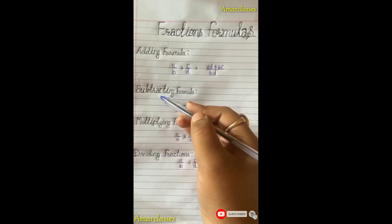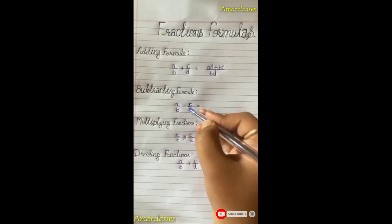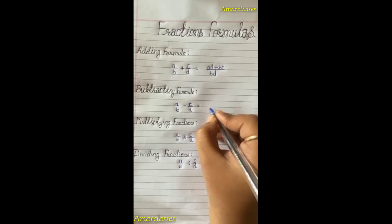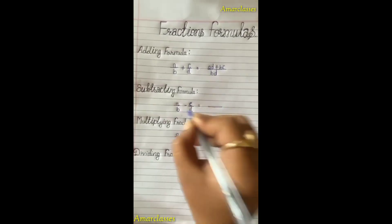Second one is subtracting formulas: a by b minus c by d equals LCM, cross multiply ad minus bc.